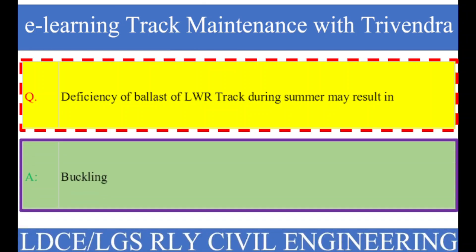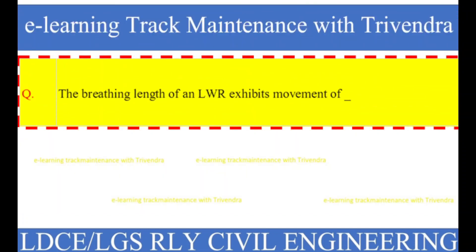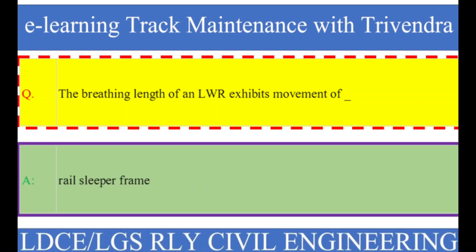Question number 57: The breathing length of an LWR exhibits movement of? The right answer is the rail-sleeper frame.